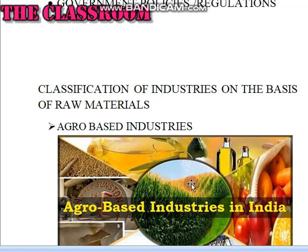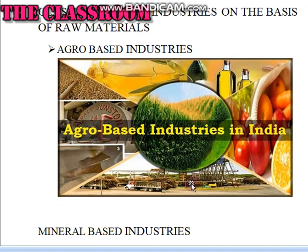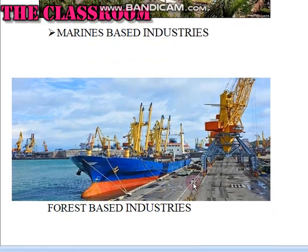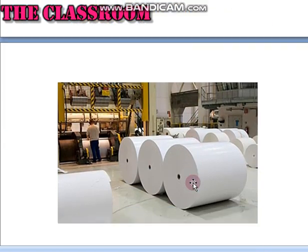Classification of industries on the basis of raw materials. Agro-based industries use plant and animal-based products as their raw materials. Mineral-based industries use mineral ores as raw materials — iron made from iron ore, cement, machine tools, etc. are examples. Marine-based industries use products from the sea and oceans as raw materials. Forest-based industries use forest products as raw materials — examples include pulp and paper, furniture, and some pharmaceutical industries.